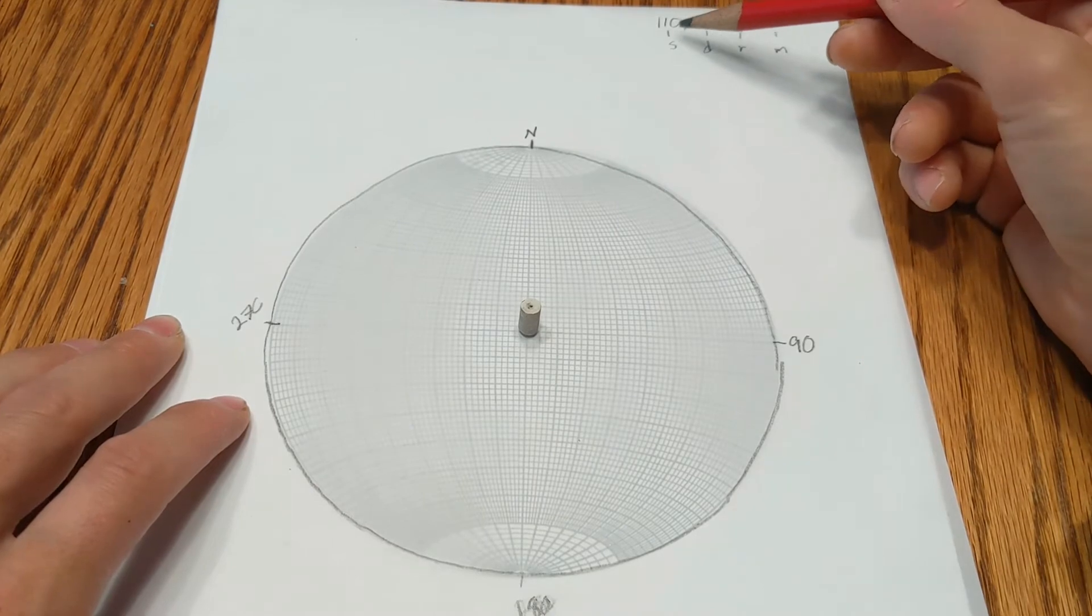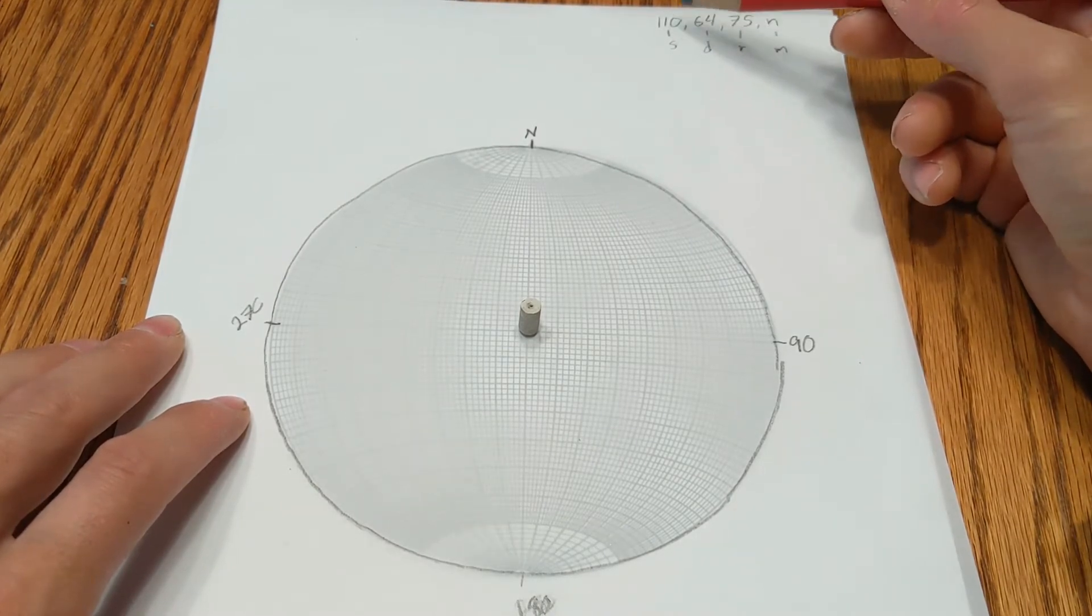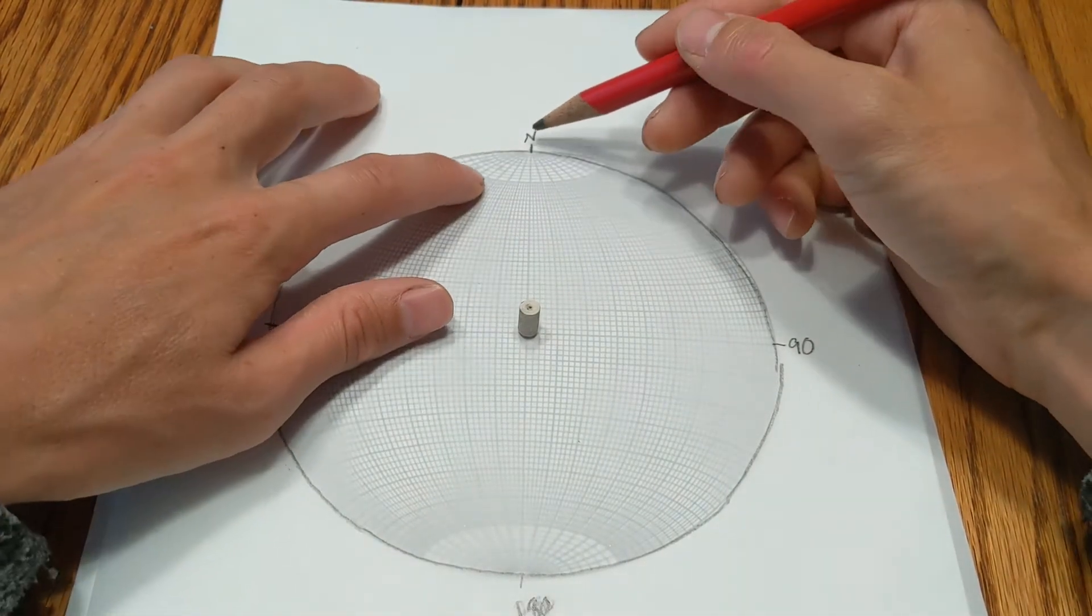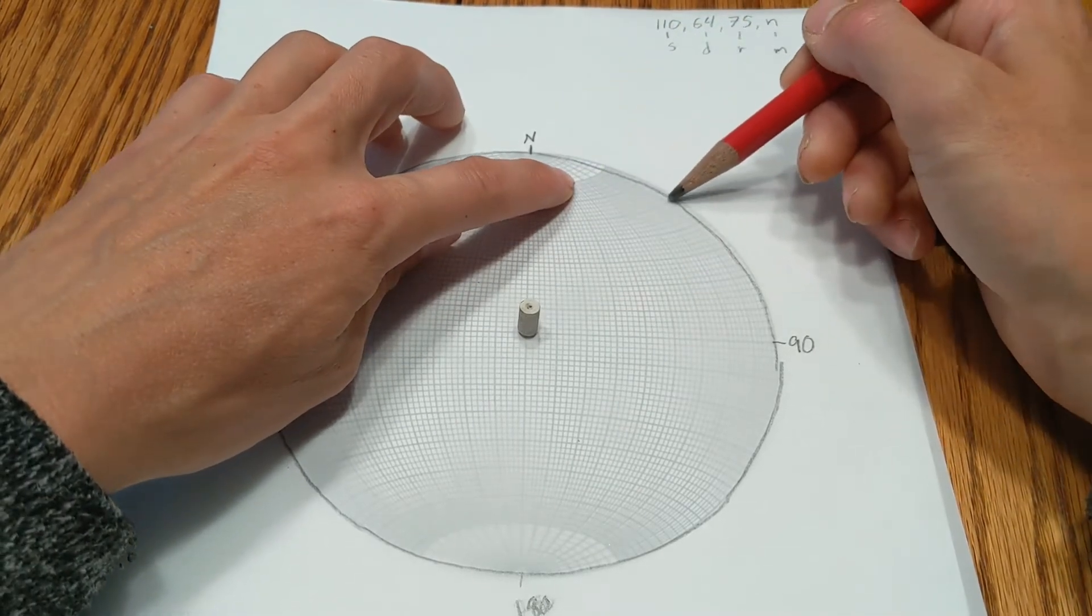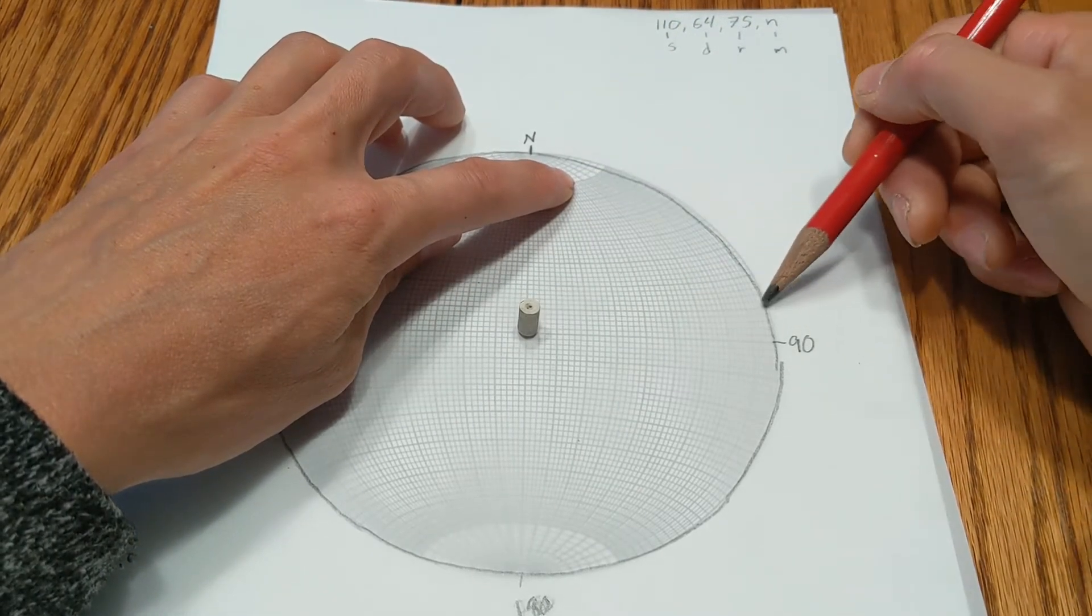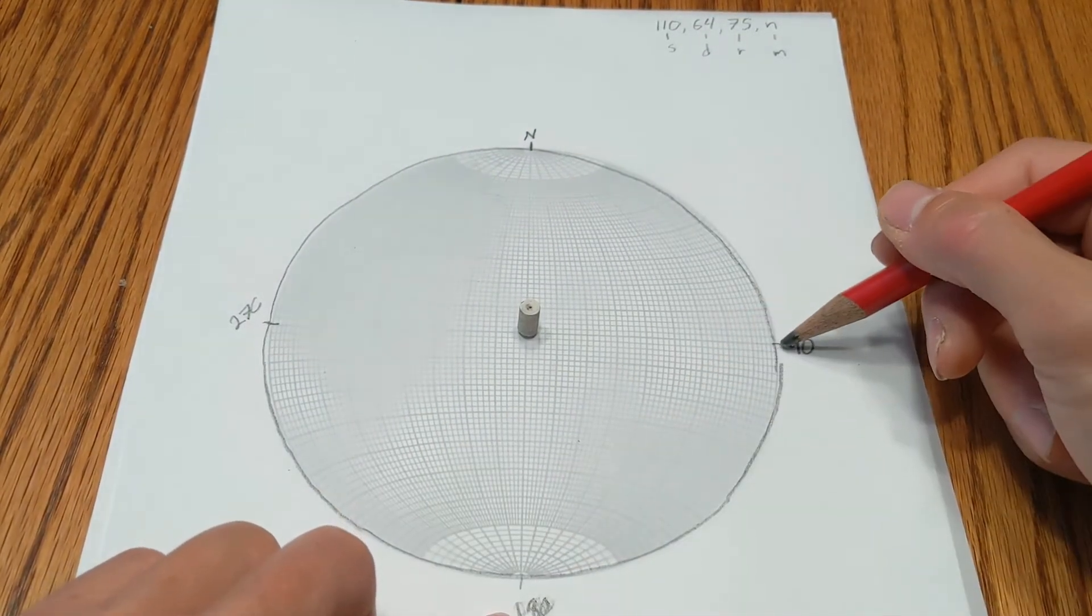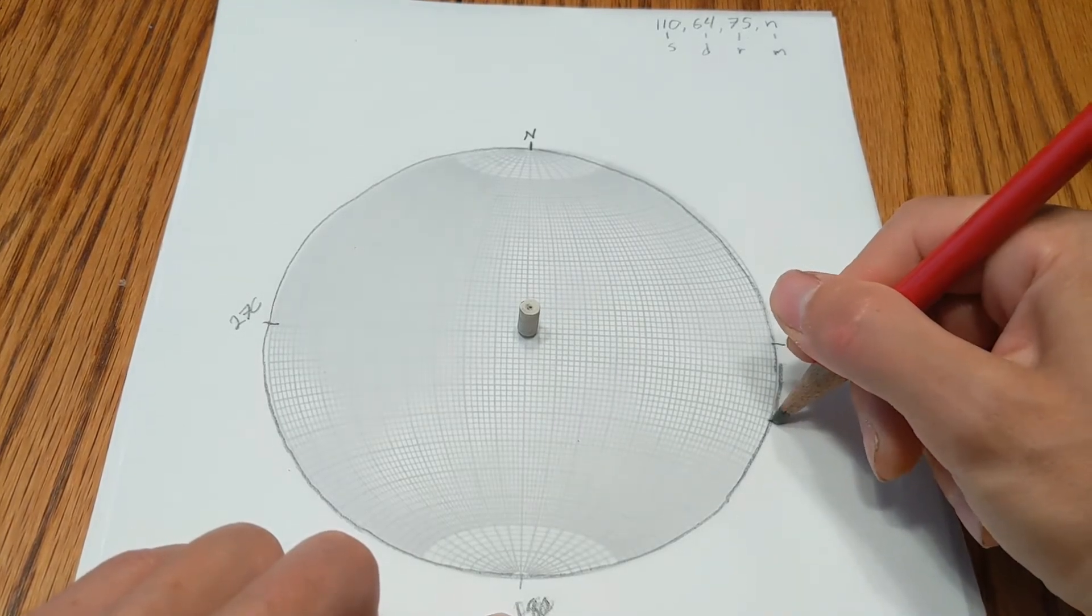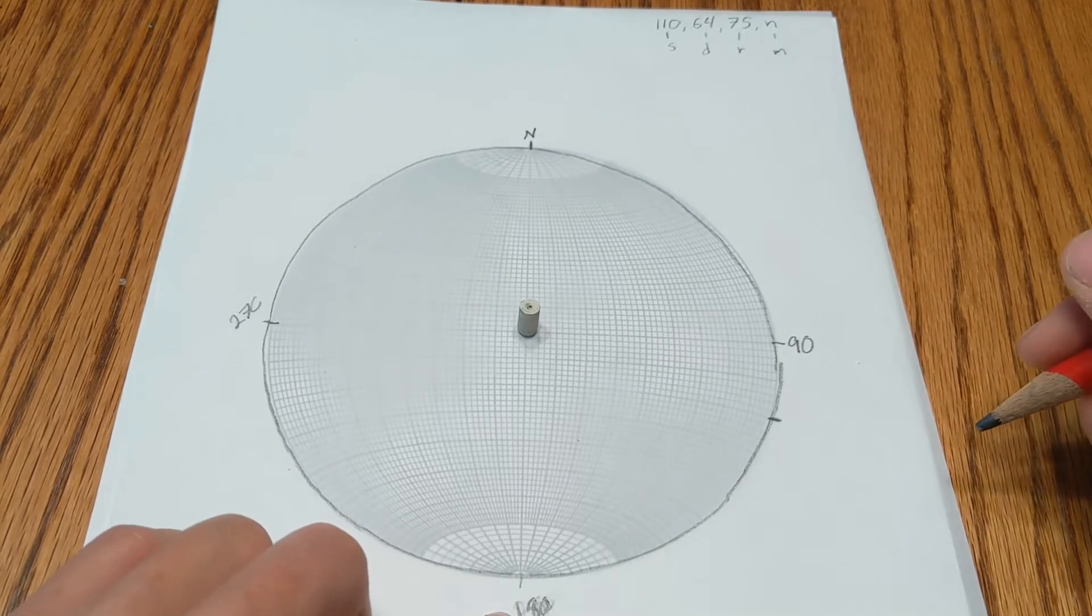Alright, so my strike is 110. So to plot that, I use the small circles, and there is a bold line every 10 degrees. Since I have 90 here, 180 there, 90, that's going to be 100. This is going to be 110. So that is the strike of this fault plane.